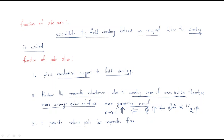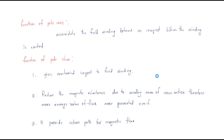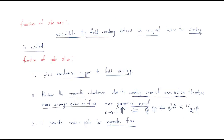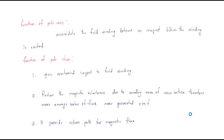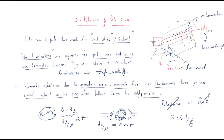Third, the pole shoe provides a return path for the magnetic flux. Flux is generated at the north pole and connects to the south pole, and the pole shoe assists in providing that return path for the magnetic flux.